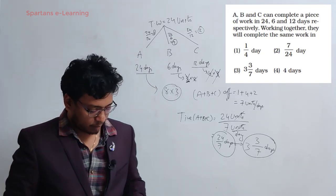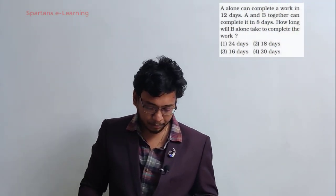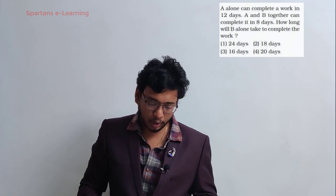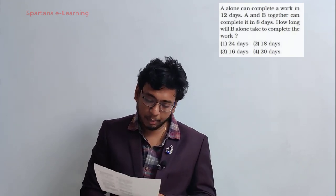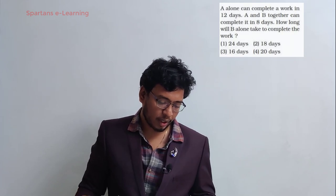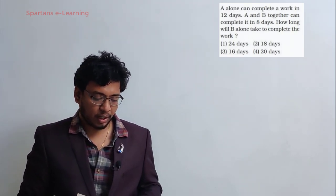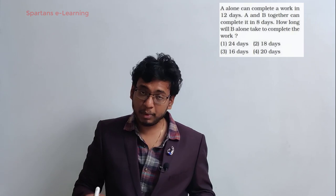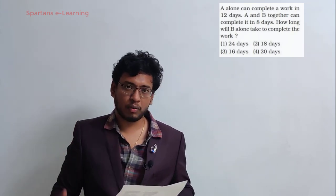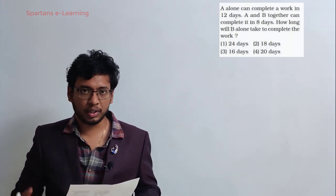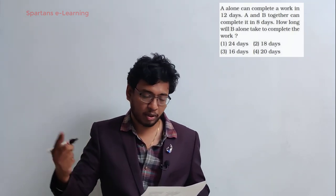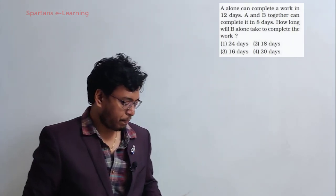Question 3: A alone can complete a work in 12 days. A and B together can complete it in 8 days. How long will B take alone? I'll assume total work as LCM of 12 and 8, which is 24 units. Efficiency of A = 24÷12 = 2; efficiency of A+B = 24÷8 = 3. So efficiency of B = 3 − 2 = 1. Answer: B takes 24 ÷ 1 = 24 days.